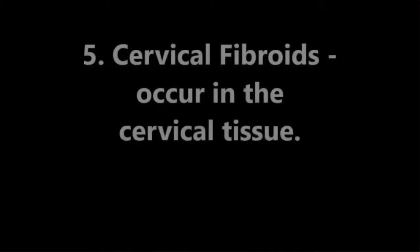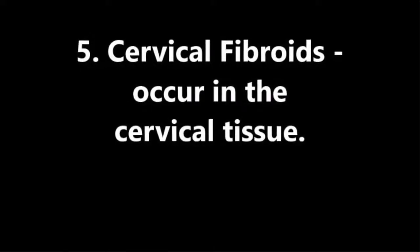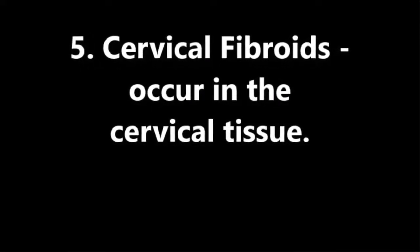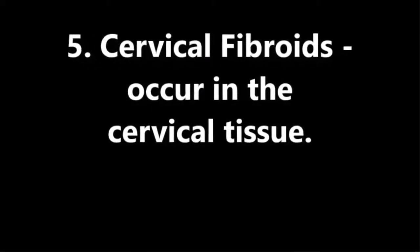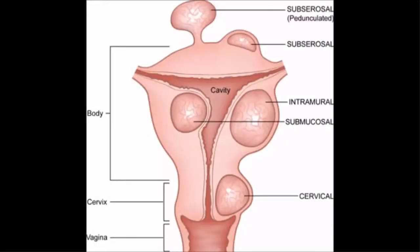Fifth, cervical. Cervical fibroids occur or develop in the cervical tissue. Incidences of these, however, are quite rare. From the diagram, we can see where a cervical fibroid would likely develop.